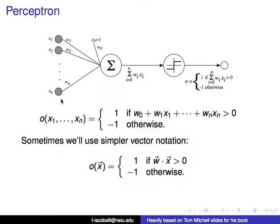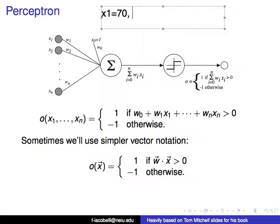Once you have the values for the variables, on one instance, for example, the temperature is 70 degrees, so x1 is 70; x2 is the air pressure, which is 123 (whatever the units are); and xn, the humidity, is 50%. Each of these will have a weight: w1, w2, to wn, and then there's a dummy w0.